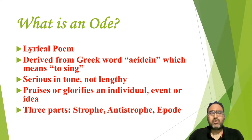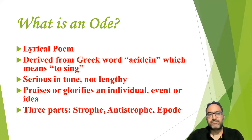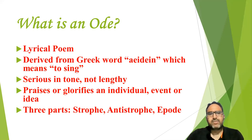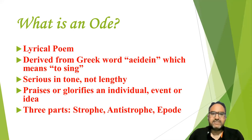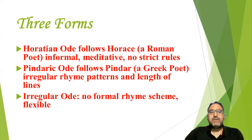Usually an Ode has three parts. Since this is not an English literature class and you are first-year, second-semester students, we won't go into detail about these parts. Just for the sake of information: the three parts are strophe, antistrophe, and epode. These three parts are usually — though not always — present in a typical Ode. Just remember that they exist.